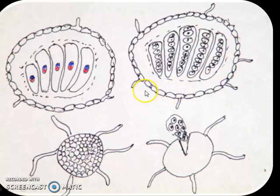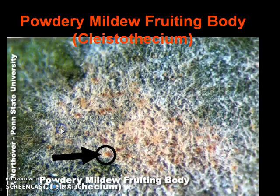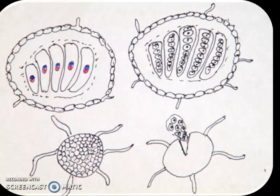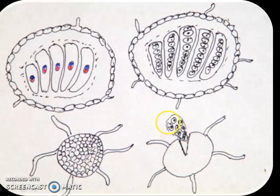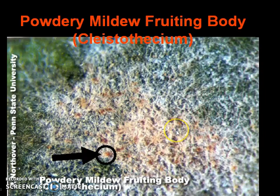At the end of development, the cleistothecium appears as a ball-like structure with hyphal ornamentations. At maturity, it will form a suture or slit through which the asci come out one by one. Each ascus is covered with a thin wall or vesicle-like structure which will burst open and release ascospores, which will germinate and cause new infection the next season.